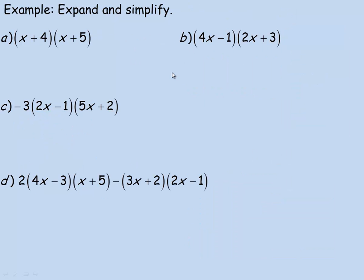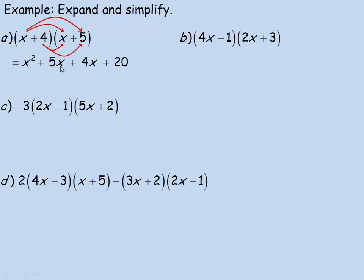Flipping over to the examples on the second page, we have 4 examples to look at — no algebra tiles here, just expanding, just do the algebra. So x times x gives you x squared, then we multiply x by 5 to give you 5x, and then 4 times x gives you 4x, and 4 times 5 gives you 20. The like terms are 5x and 4x, so they can be added together, giving us x squared plus 9x plus 20.